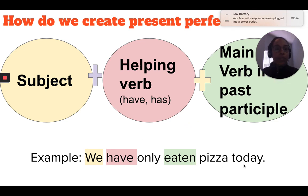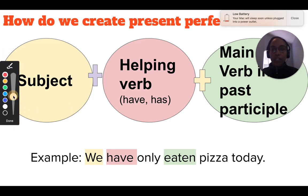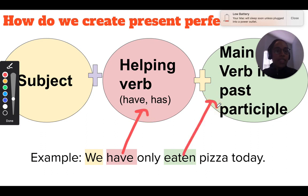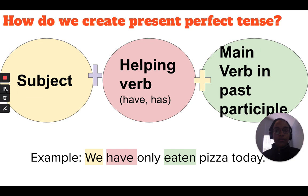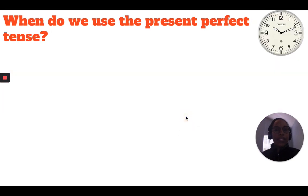For example: 'We have only eaten pizza today.' Here, 'we' is the subject, 'have' is our helping verb, and 'eaten' is our main verb in the past participle. These are the things we need to make the present perfect tense.